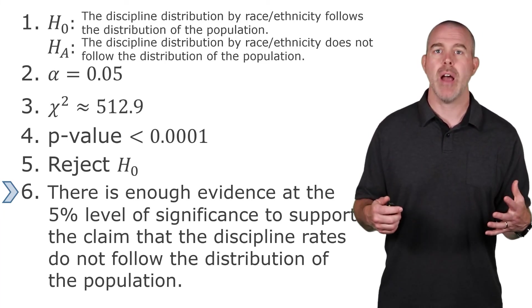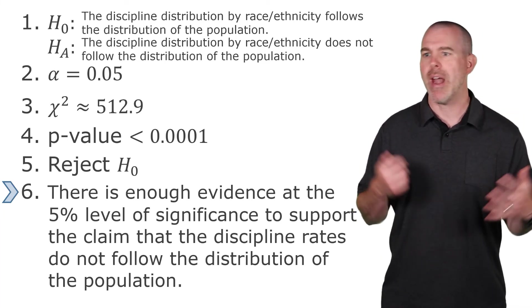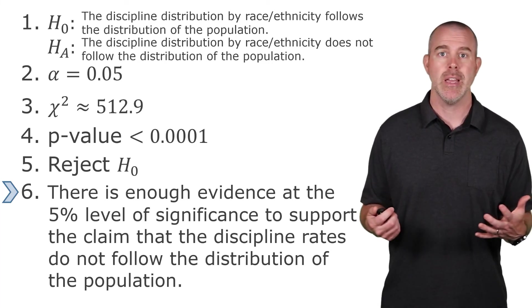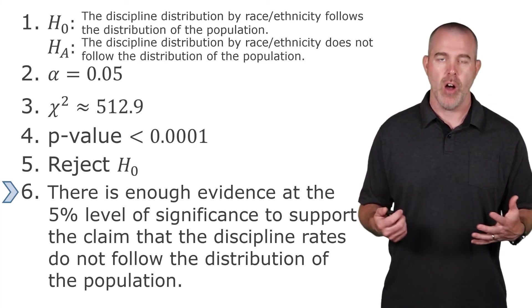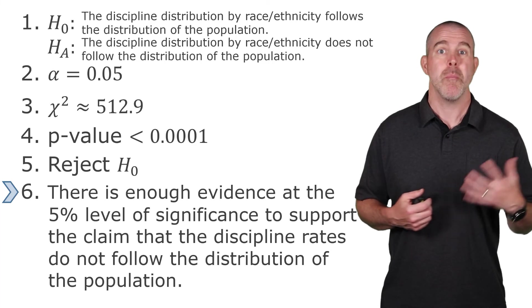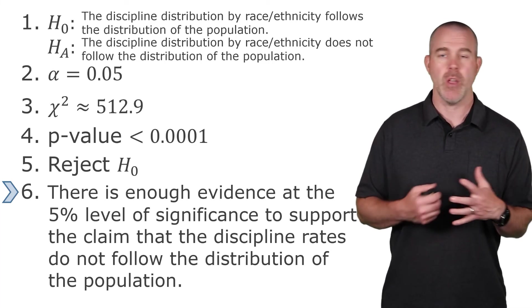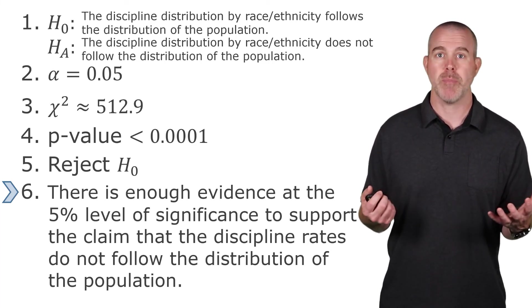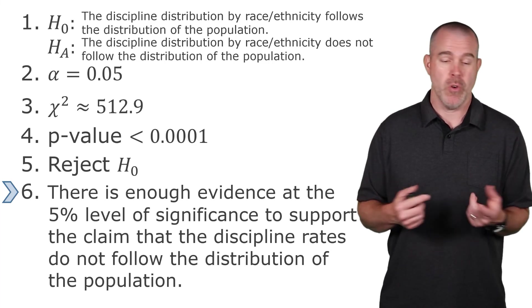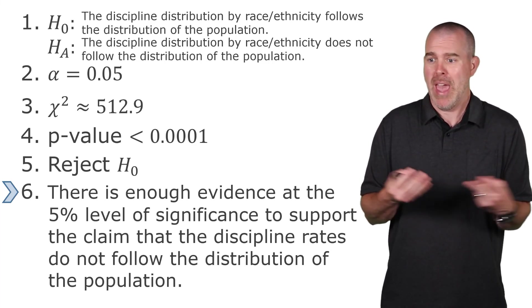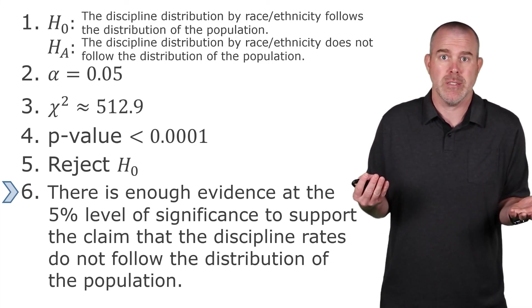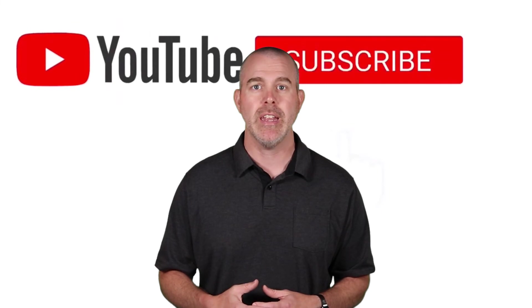And again, that's not a surprise. We've seen this repeatedly. No matter how we looked at those data, it always showed that the race or ethnic groups mattered. It made a difference. They weren't distributed the way we would expect if there was either no bias or no actual behavior differences based on race. All right, that is it for this video on the chi-squared goodness of fit test. I hope it helped you understand it. If you're interested in seeing more, you can subscribe. Hit the bell to get notified.